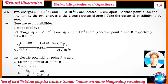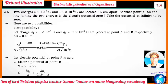Today in electric potential and capacitance, we see one numerical. Two charges 5×10⁻⁸ coulomb and -3×10⁻⁸ coulomb are located 16 centimeters apart. At what points on the line joining the two charges is the electric potential zero? Take the potential at infinity to be zero. There are two possibilities. First possibility: let charge Q1 = 5×10⁻⁸ coulomb and Q2 = -3×10⁻⁸ coulomb.